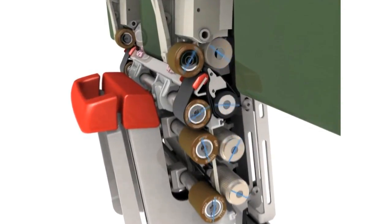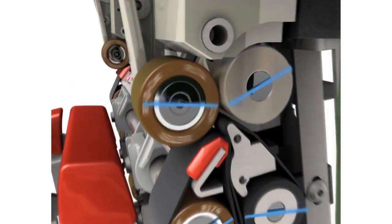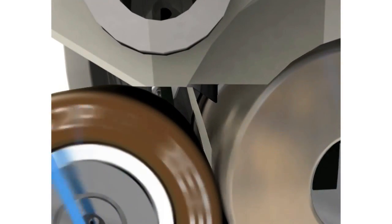Fibers that leave the drafting zone are guided through the fiber feeding element, FFE, by means of negative pressure.